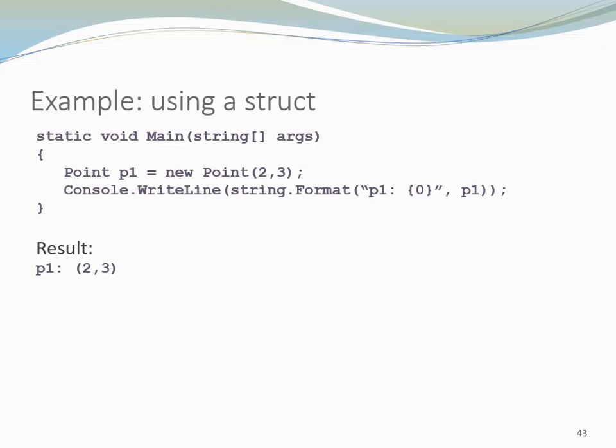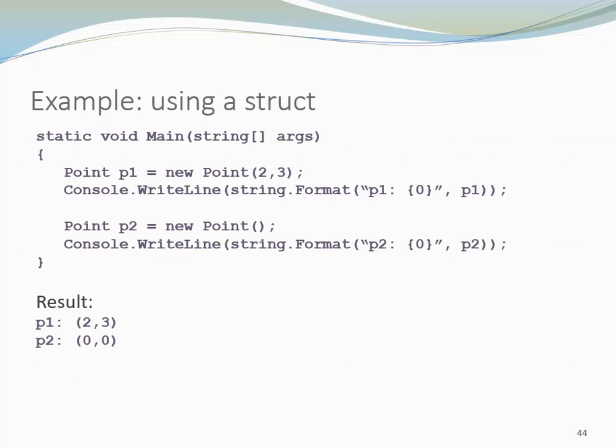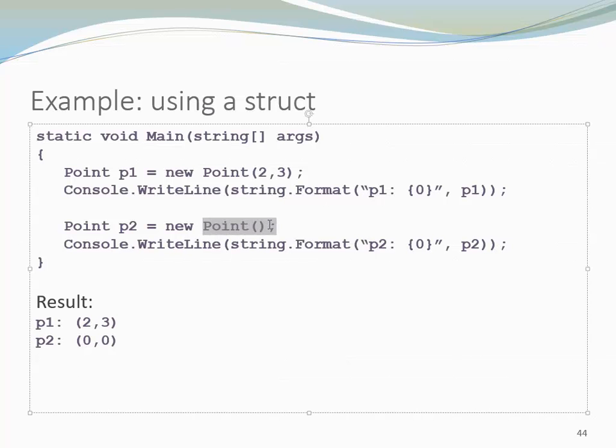What might be more surprising is the following. I can also create a point p2 using the default constructor. This would be impossible in the context of a class because in a class I lose my default constructor the moment I create my own constructor. So that is different in our structs where I always have a parameterless default constructor. And when I look at my p2, I can see it has been initialized with the default values 0,0.